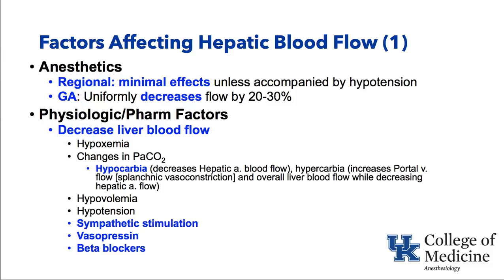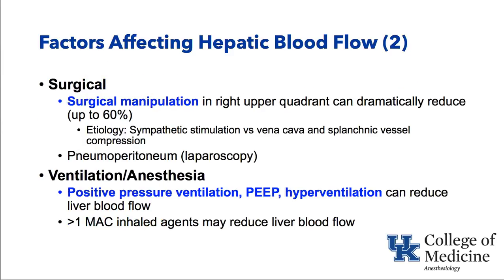Some factors affecting hepatic blood flow: regional anesthesia — spinal or epidural — if you don't let the patient become very hypotensive with low cardiac output, it will have little effect on hepatic blood flow. General anesthesia uniformly decreases blood flow a little bit, maybe 20 to 30 percent. Physiologic and pharmacologic factors that decrease blood flow include hypoxemia, hyperventilation causing hypocarbia, severe hypovolemia, severe hypotension, sympathetic stimulation, and administration of drugs like vasopressin and beta blockers. One of the biggest factors is surgical manipulation in the right upper quadrant near the liver, which can dramatically reduce blood flow up to about 60 percent — possibly due to sympathetic stimulation or compression of vessels around the liver.